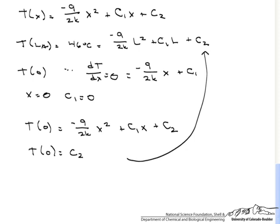We go back up to here, remembering that C1 is 0. And we find that C2 equals q dot over 2k times LA squared. Because remember we looked at this temperature at LA plus TA, which equals T at 0.